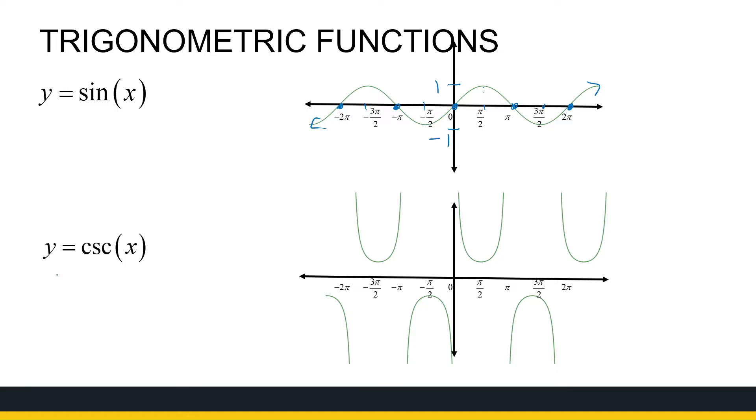Now if we look at cosec x, it's very closely linked to sine of x. We saw that cosec x is just one over sine of x. So that means where sine of x is zero, cosec x should have an asymptote because I'm not allowed to divide by zero. So here at minus two pi, minus pi, zero, pi, and two pi, cosec x has an asymptote, meaning the graph gets close to it but never really gets there.